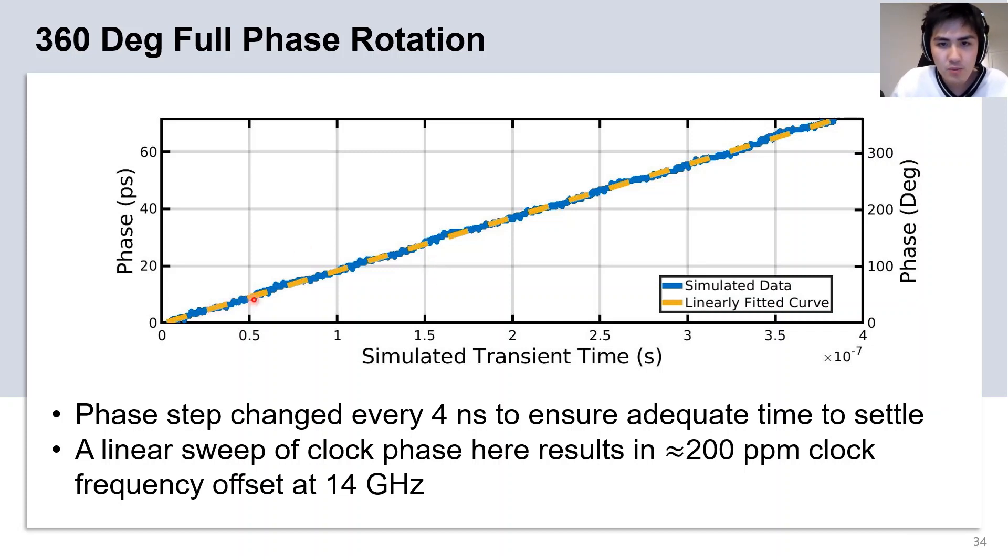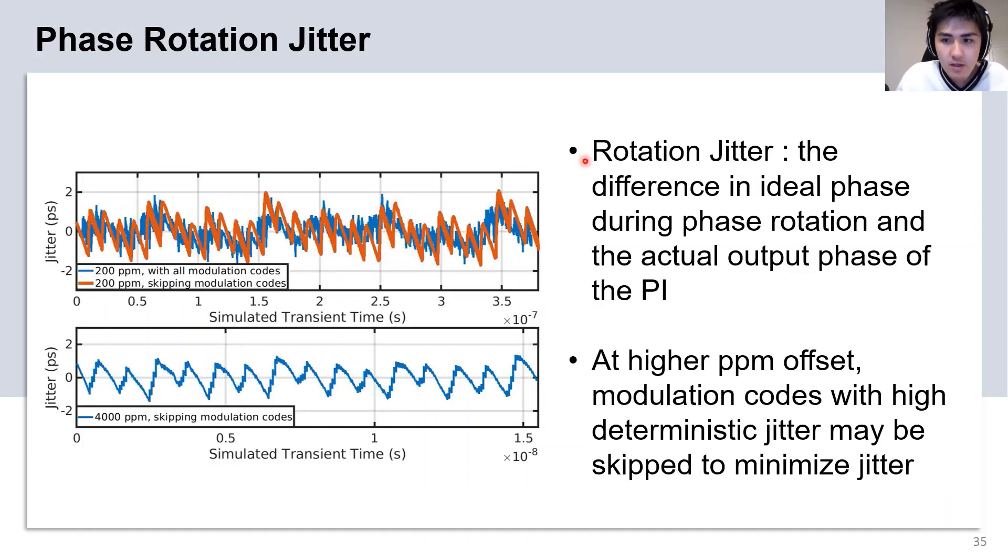The blue plot here shows the simulated data, while the yellow dotted line is the ideal linear phase sweep. Here we define the phase rotation jitter as the difference between the ideal phase during phase rotation and the actual outputted phase of the PI when used as a phase rotator.